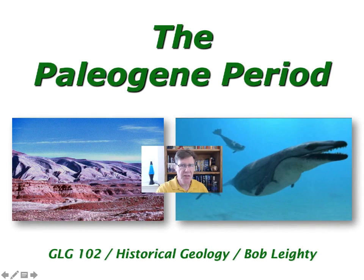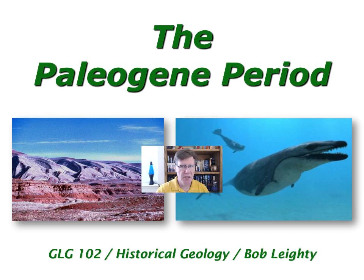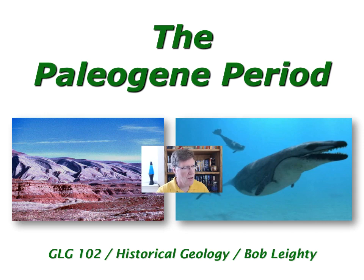We've finally come to the last era of the Phanerozoic Eon — the Cenozoic. The first period of the Cenozoic Era is the Paleogene, which occupies the time that used to be known as the Early Tertiary. It is a continuation of many things, but also a time of vast change, including continuation of the mountain-building events of the Laramide Orogeny in western North America. The climate would continue to be warm throughout most of the Paleogene, but then see some major changes at the end.